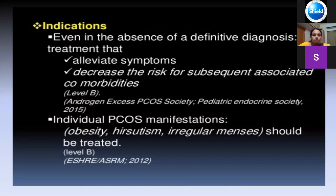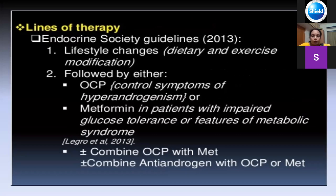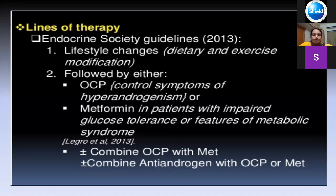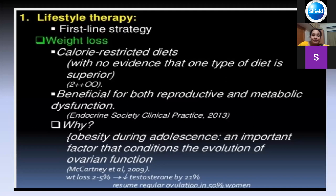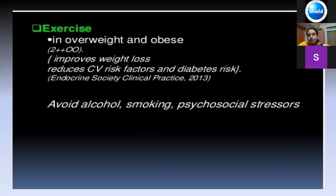For lifestyle changes, if the child is obese, prescribe 150 minutes of exercise per week to reduce weight and 90 minutes per week to maintain weight — it has to be done daily and made part of a lifestyle, not just a short crash course. This should be followed by either OC pills or metformin. Metformin is generally given in cases with impaired glucose tolerance, metabolic syndrome, or acanthosis nigricans.